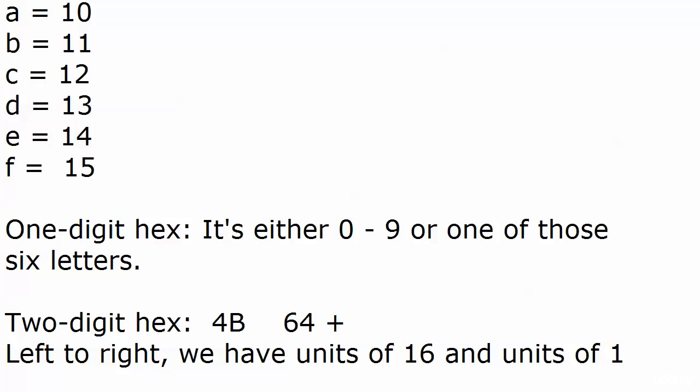If I have 4 units of 16, what do I have? I have 64. Then I have B units of 1. So B equals 11, that means I have 11, and that means I have 75.